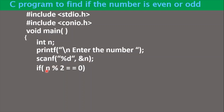Once the number is entered, it is time to check whether that number divided by 2 produces a remainder of 0 or not. For that purpose, we use the if control structure. Inside the brackets of if, the condition written is n % 2 == 0. This means: divide the number by 2, generate the remainder, and compare it with 0. The double equals sign is a relational operator that checks equality between the left-hand side and right-hand side expressions.